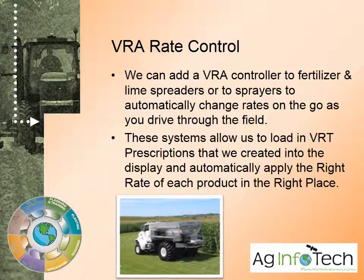Variable rate application control is when we add a variable rate controller, such as the AgLeader Integra or the Trimble 750 or FMX, to a fertilizer and lime spreader or a sprayer, and it automatically changes the rate on the go as you drive through the field. These systems allow us to load in a VRT prescription that we create in-house into the display and automatically apply the right rate of each product in the right place.